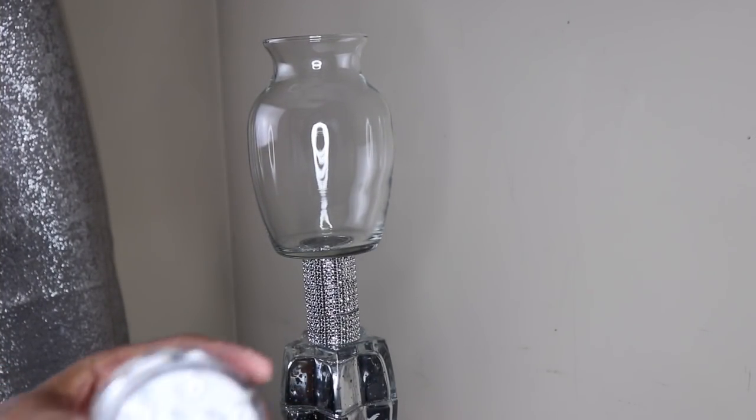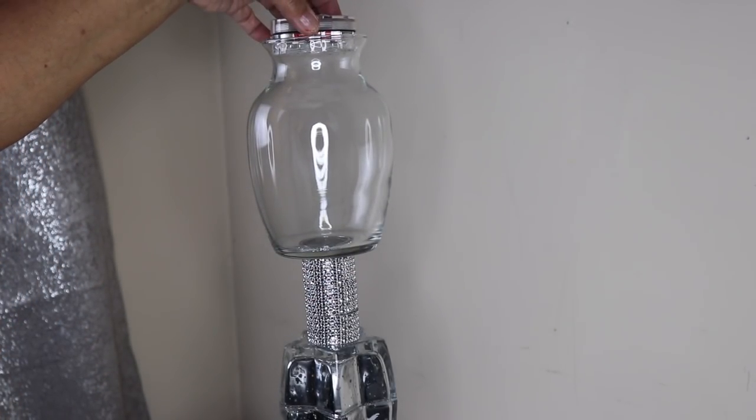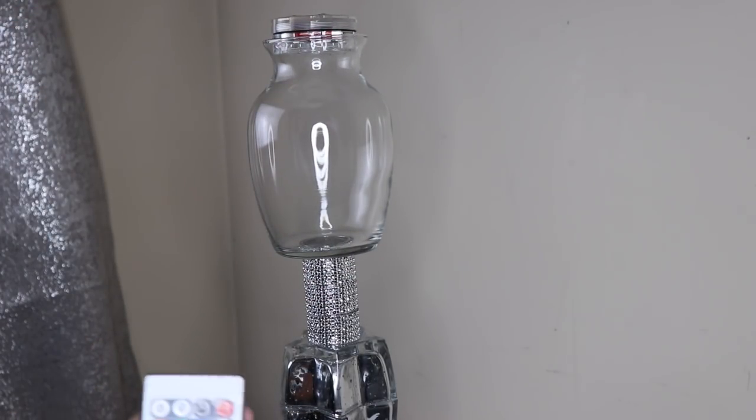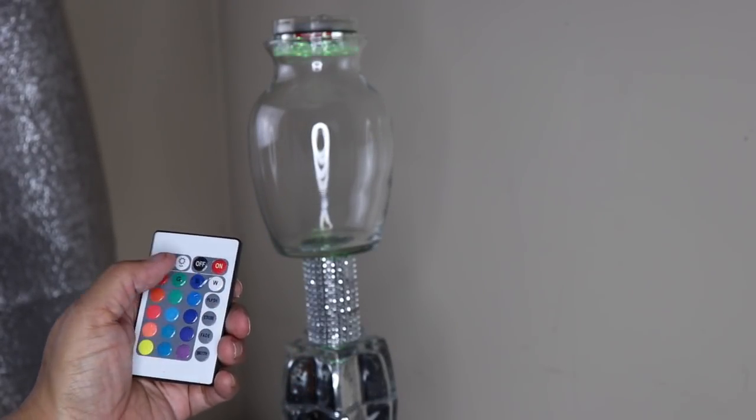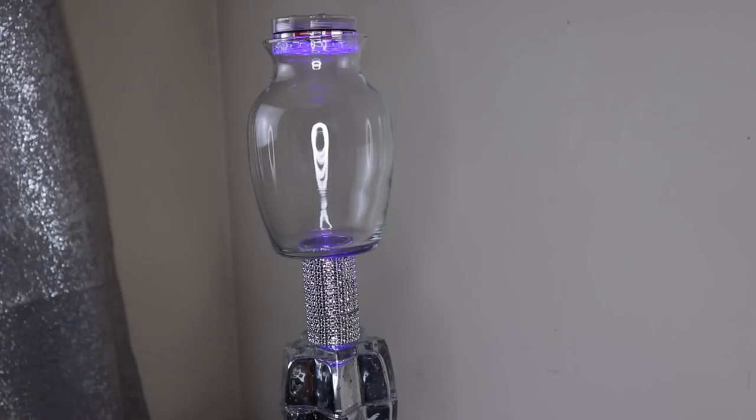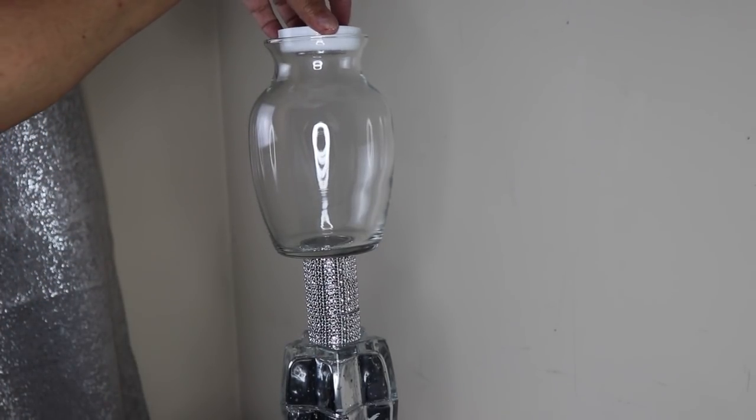Now back to our lamp. Here's a couple of lighting ideas. This LED light changes color and it doesn't overheat and it comes with a remote. And if you're interested I'll leave a link below. You could also use the push lights from Dollar Tree or even some string lights.